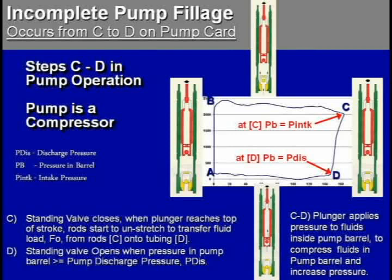Looking at this pump card, I'm talking about what happens between points C and D on the pump card, when the pump is acting like a compressor. The pressure inside the pump barrel exceeds the discharge pressure, and that allows the traveling valve ball to pop open and come off the seat at point D. So we're going to be talking about what happens in the pump between C and D.